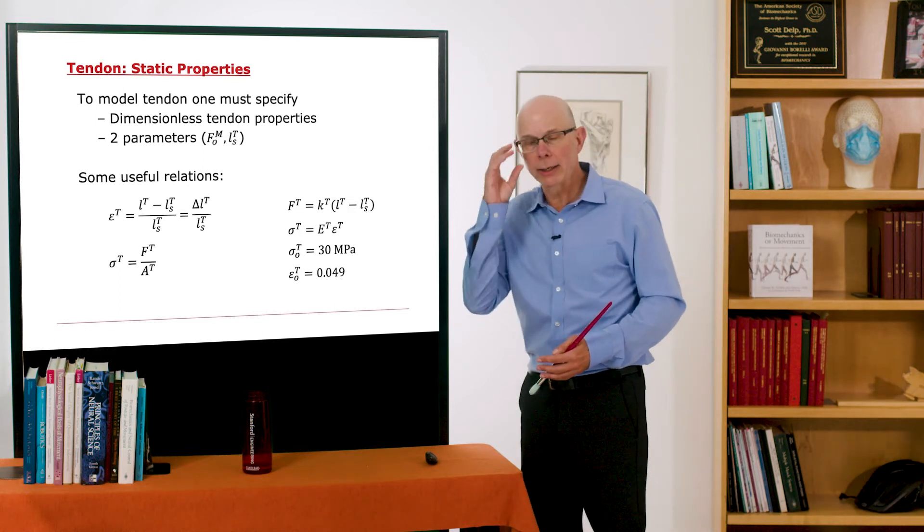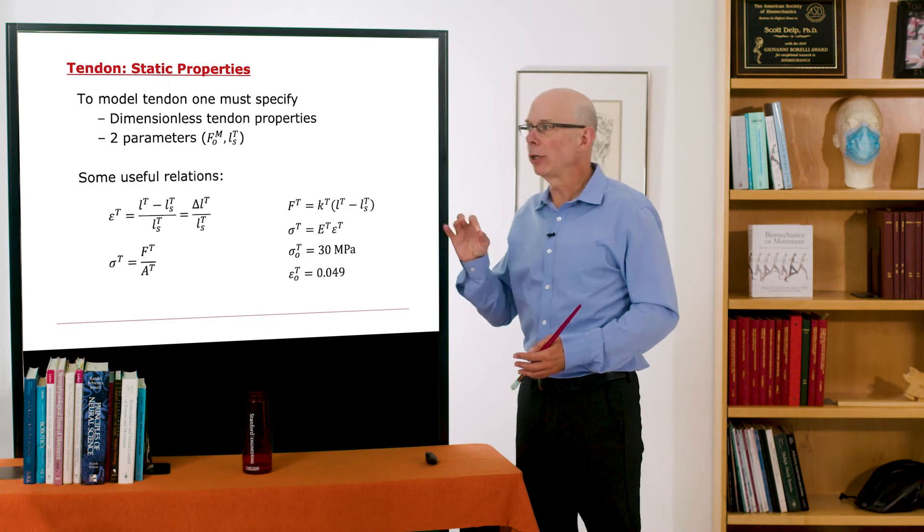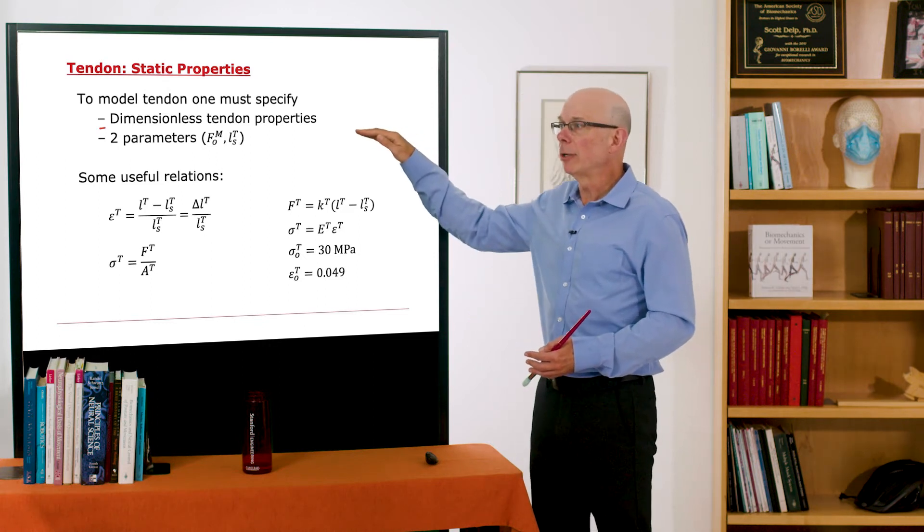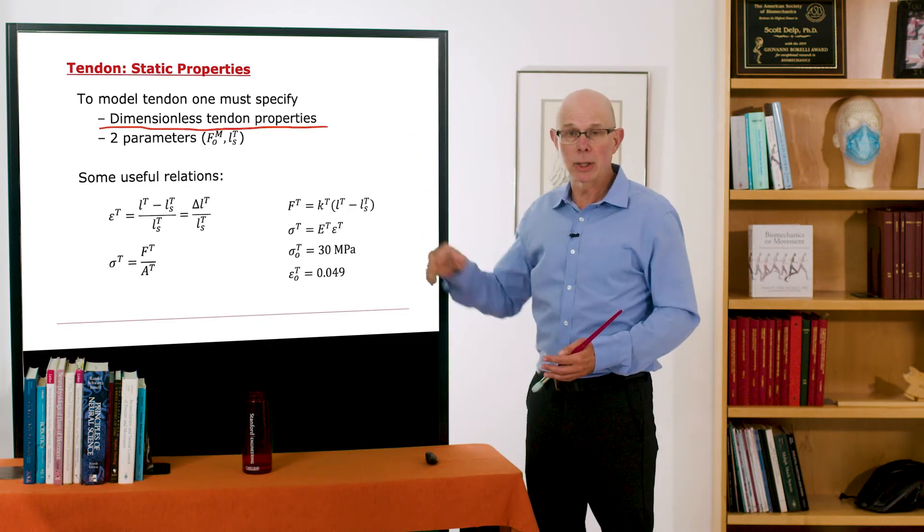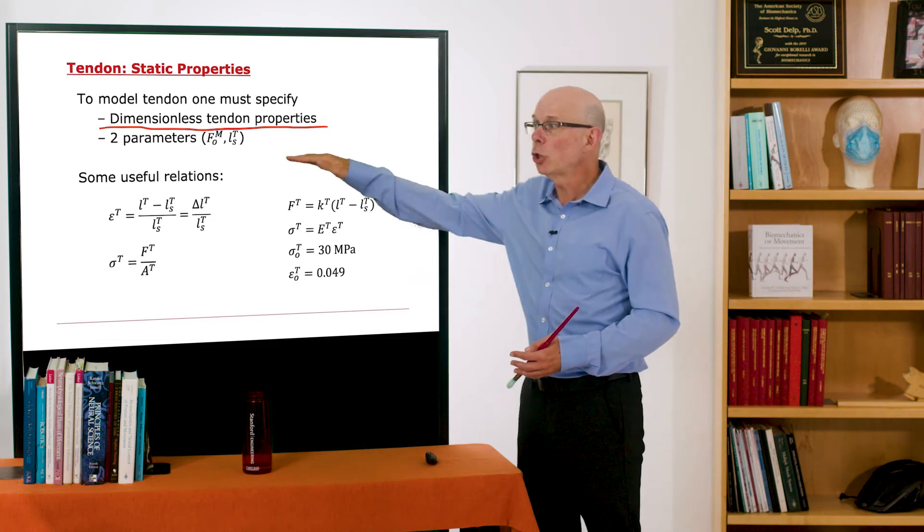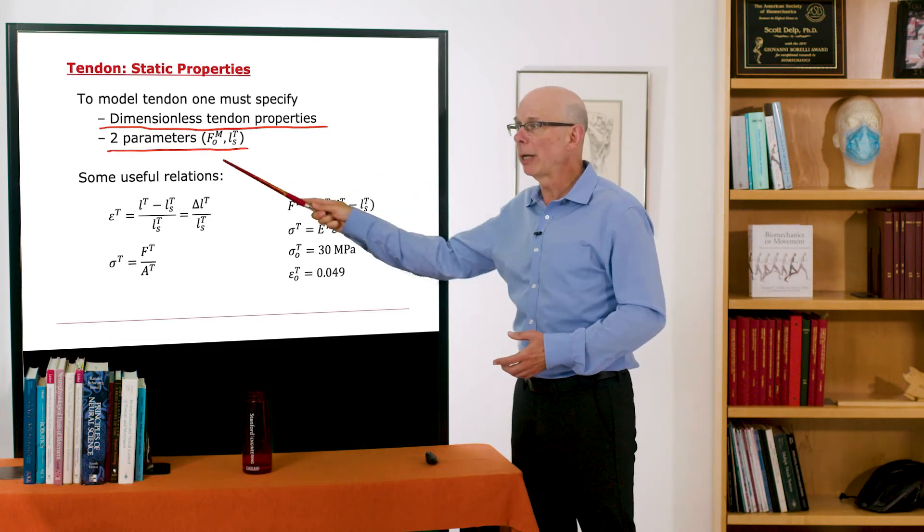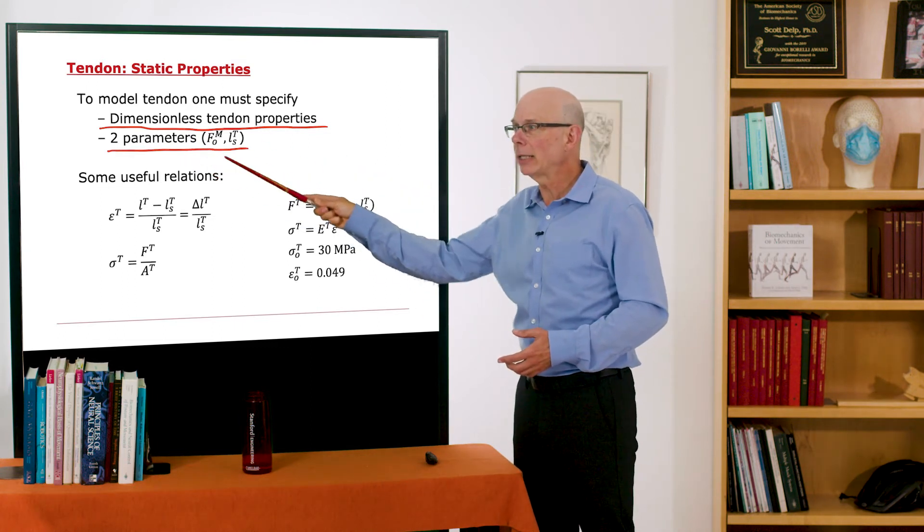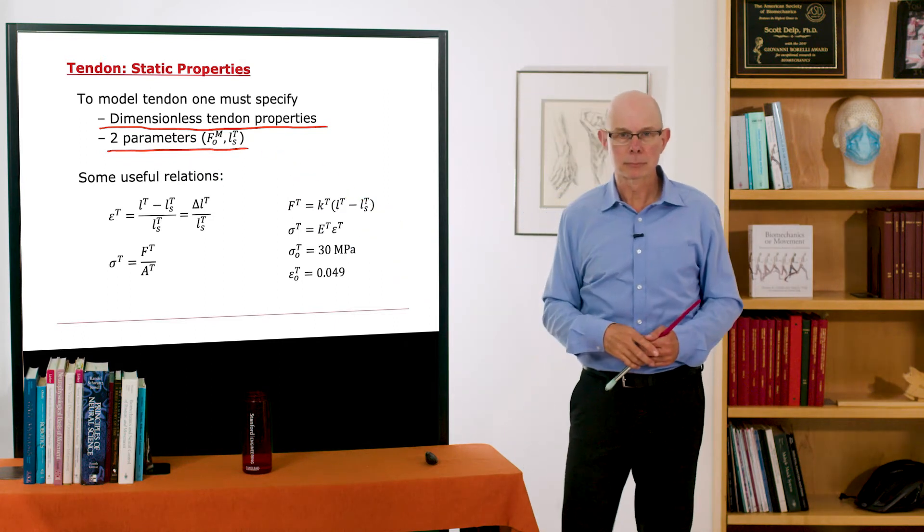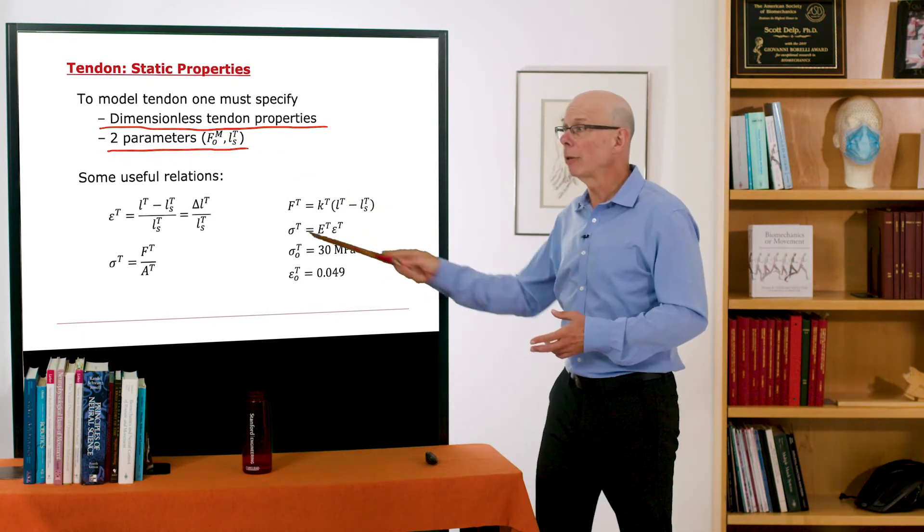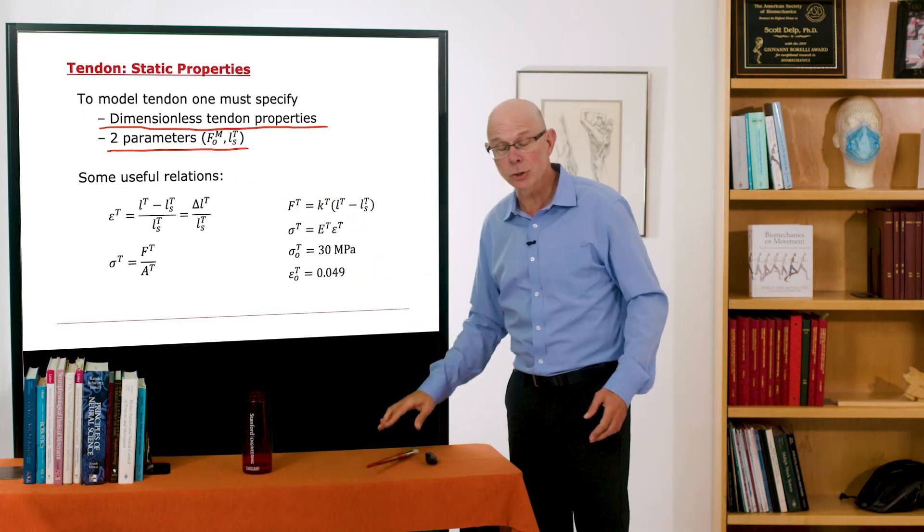So to model tendon, a specific tendon, you need to specify the dimensionless properties of tendon, that's the force length curve, and two parameters, the peak isometric force of muscle and the tendon slack length. I'm scaling tendon by the peak isometric force of muscle.